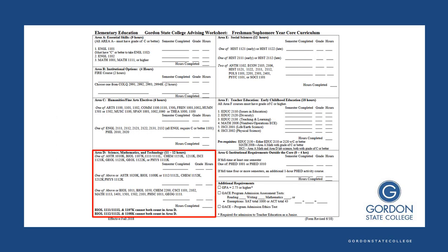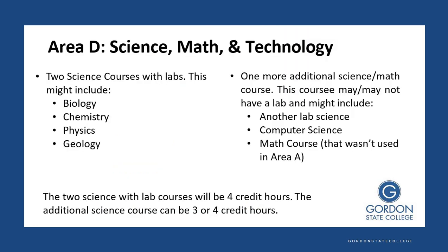Next, we move into Area D, which is your Sciences. In Area D, you're going to take three courses. Two of those courses are going to be science courses with labs, each being four credit hours. You might take Biology, Chemistry, Physics, or Geology — you can even mix and match. The third course is an additional science or math course, which may or may not have a lab, and could include another lab science, computer science, or a math course not used in Area A. Your two lab sciences must each be four credit hours, and that third class can be three or four credit hours.